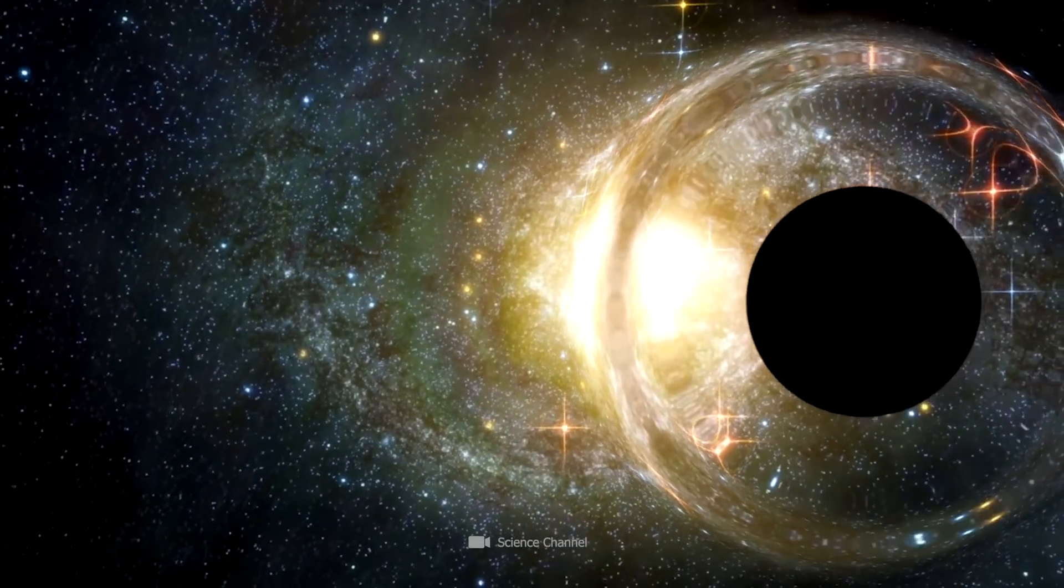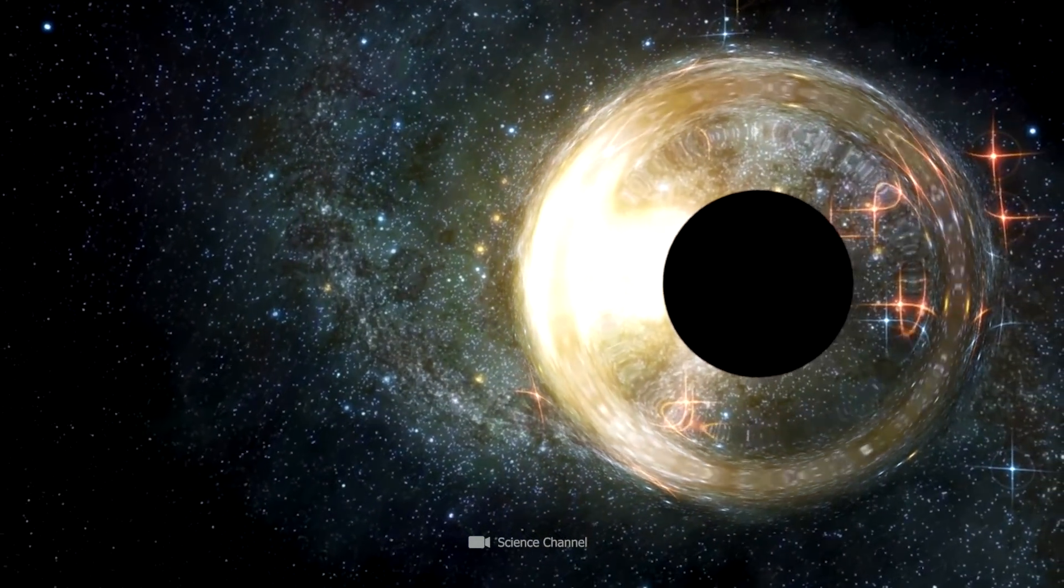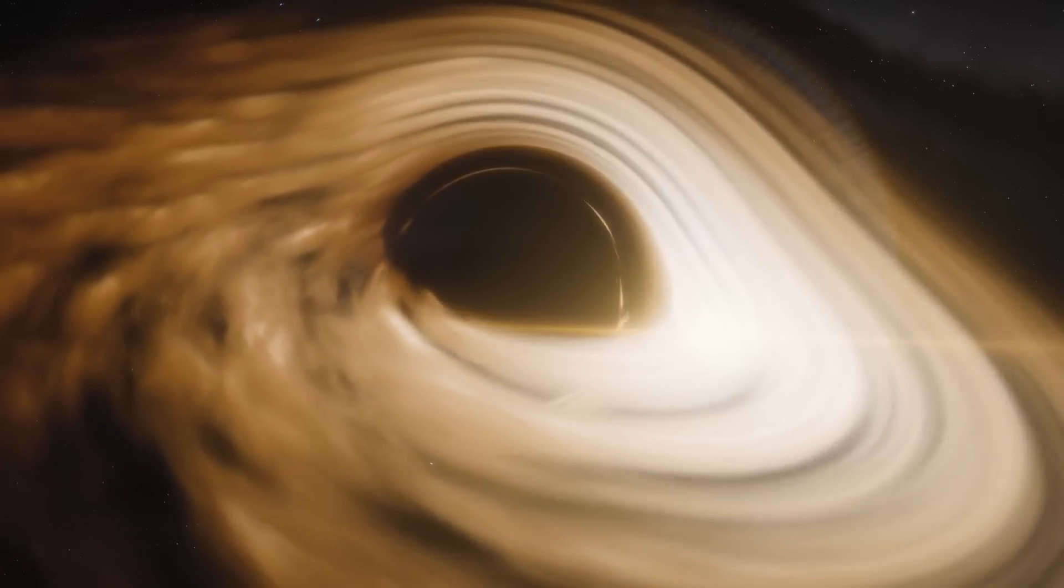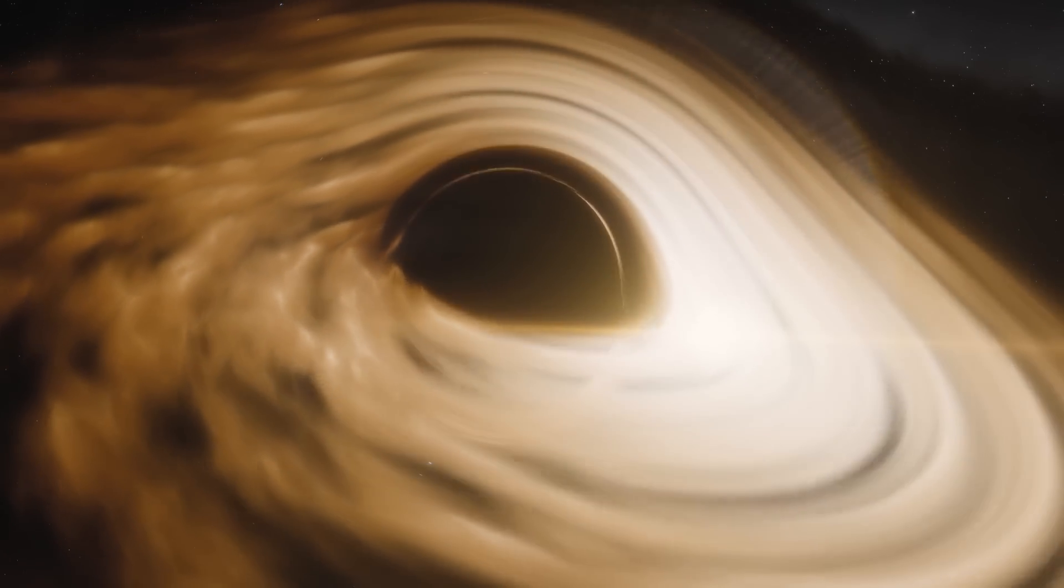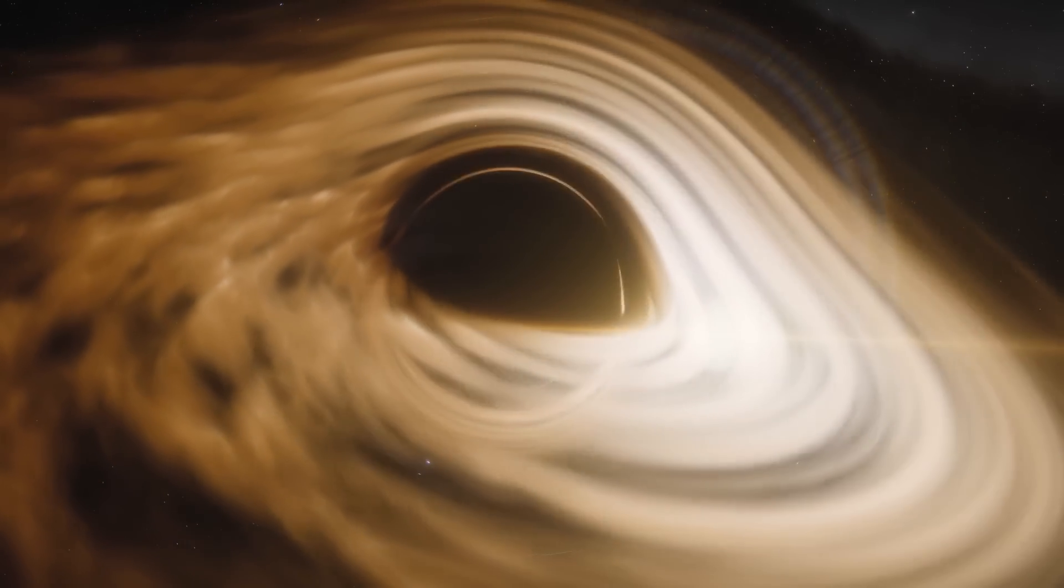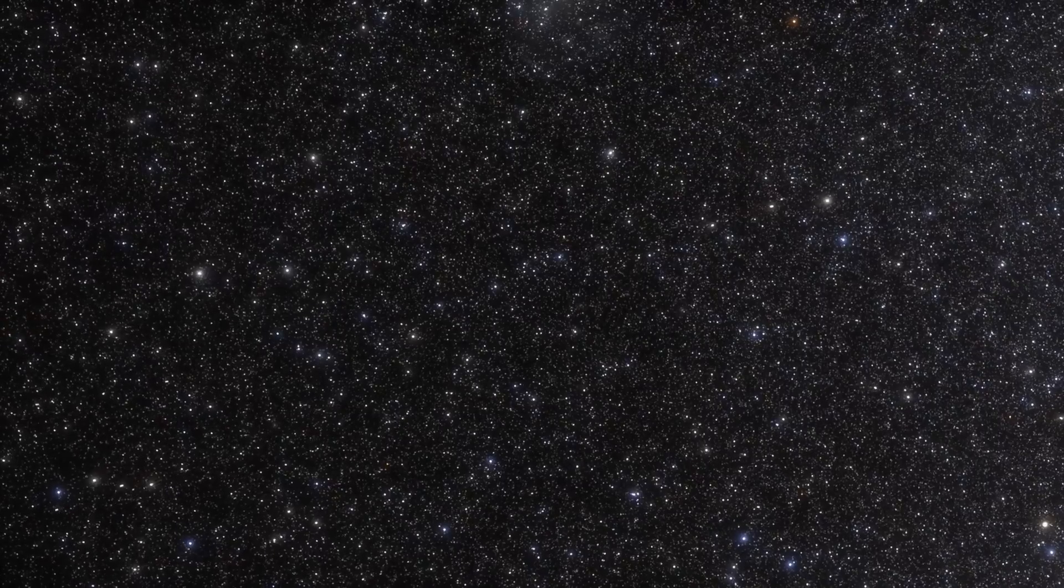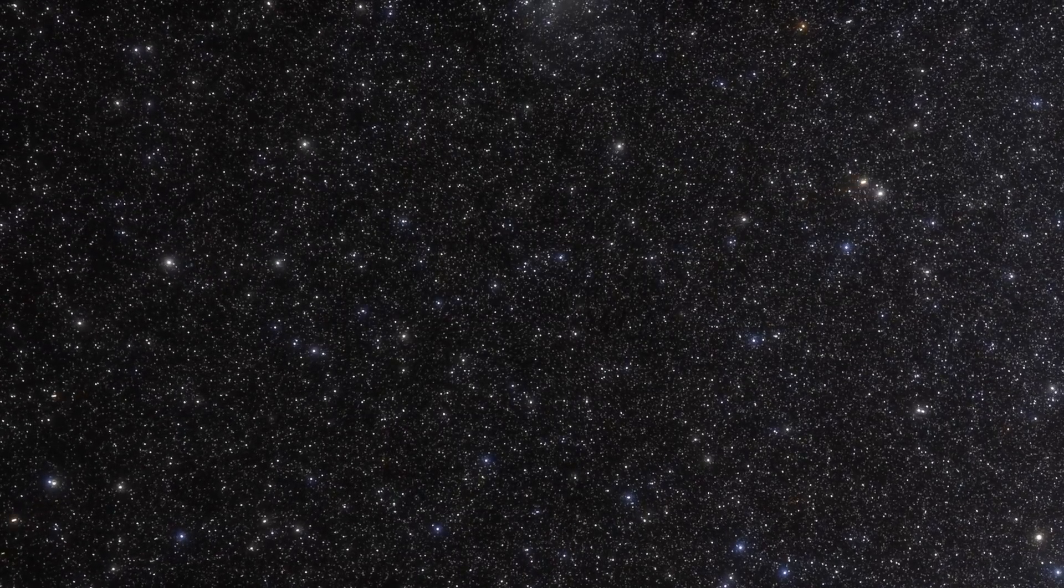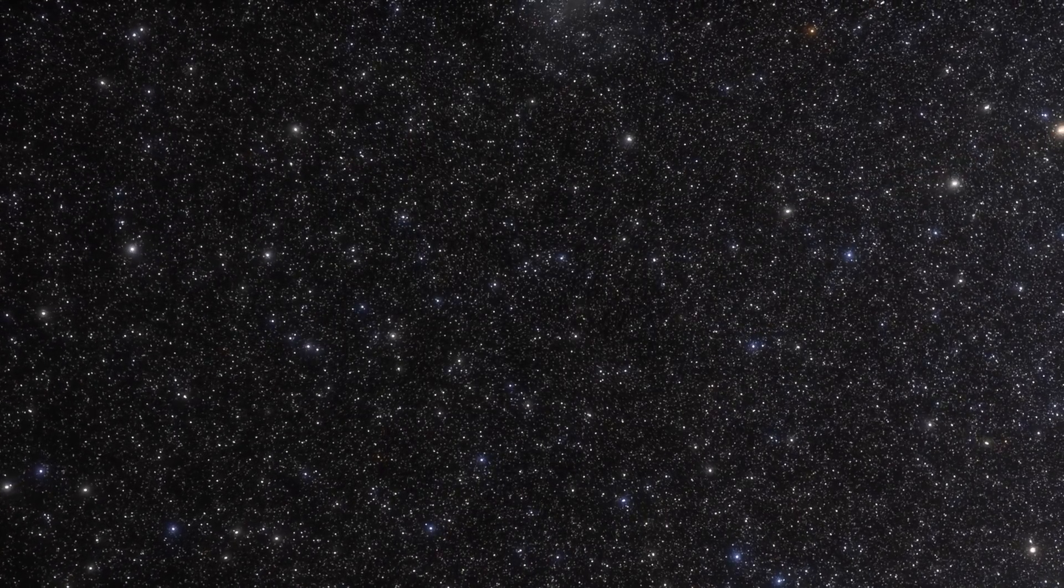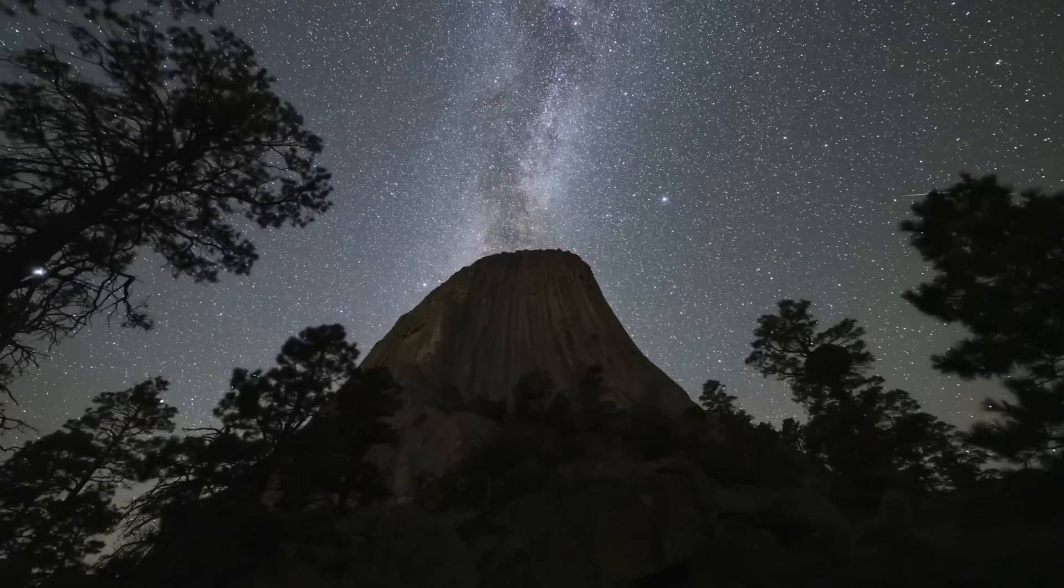One thing is certain, black holes gain weight when they eat matter. Nevertheless, it's somehow difficult to imagine that the giants hoard digested stars or gas clouds in their interior. It's much more likely that only the information, or a form of the basic matrix of matter, is preserved. But what happens then?